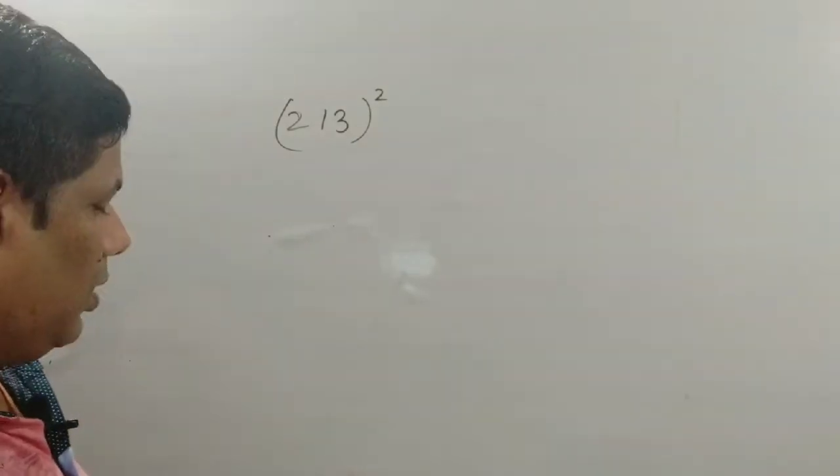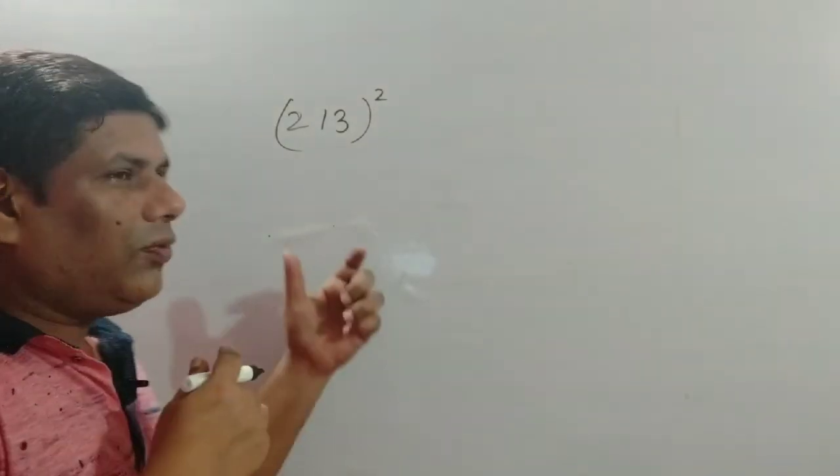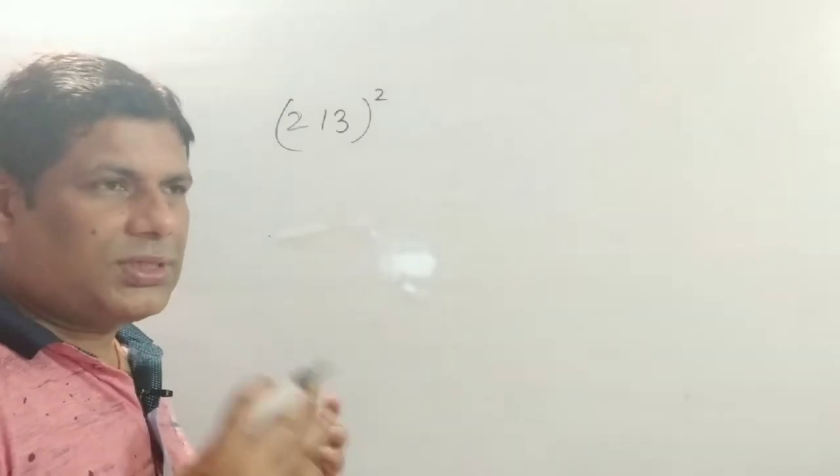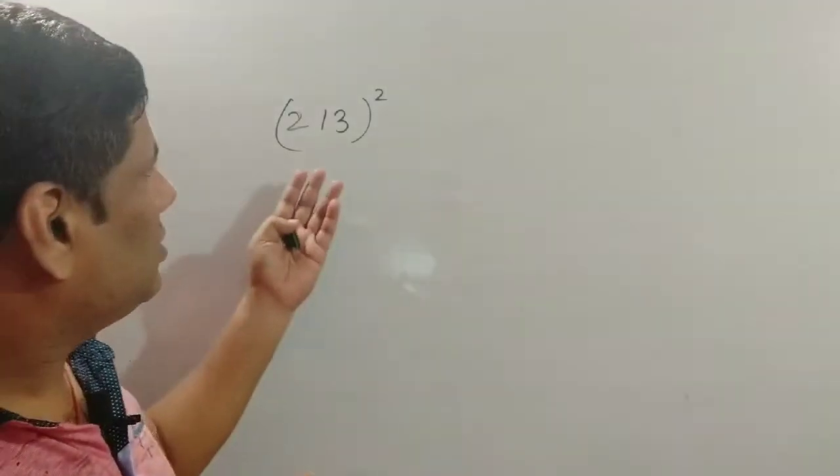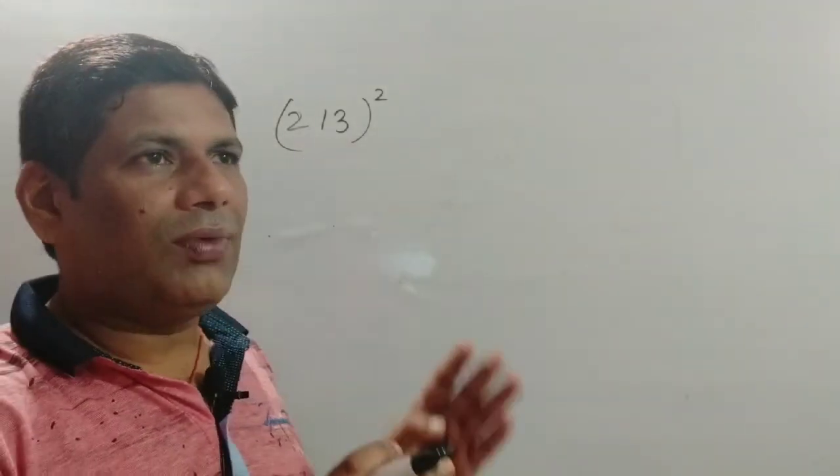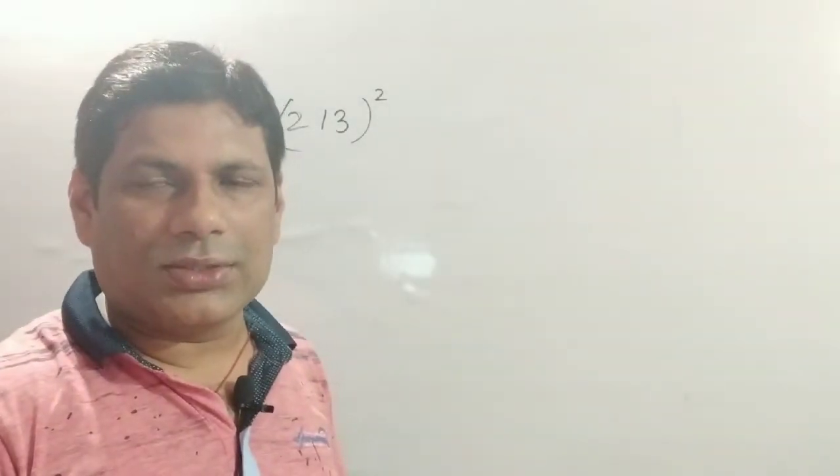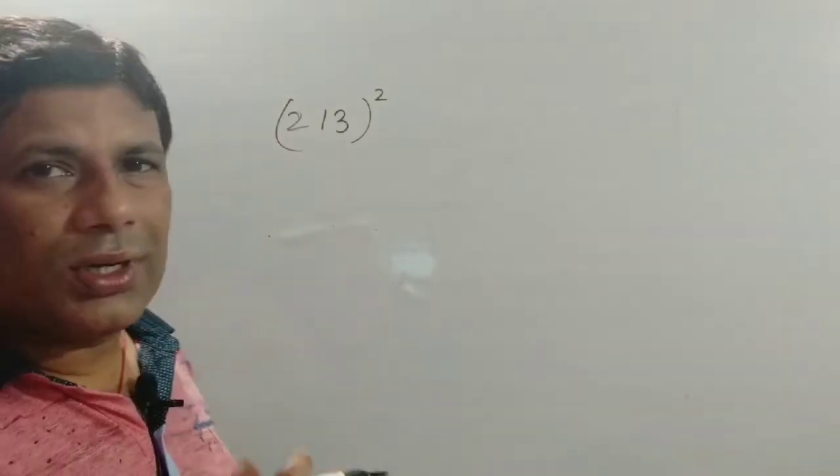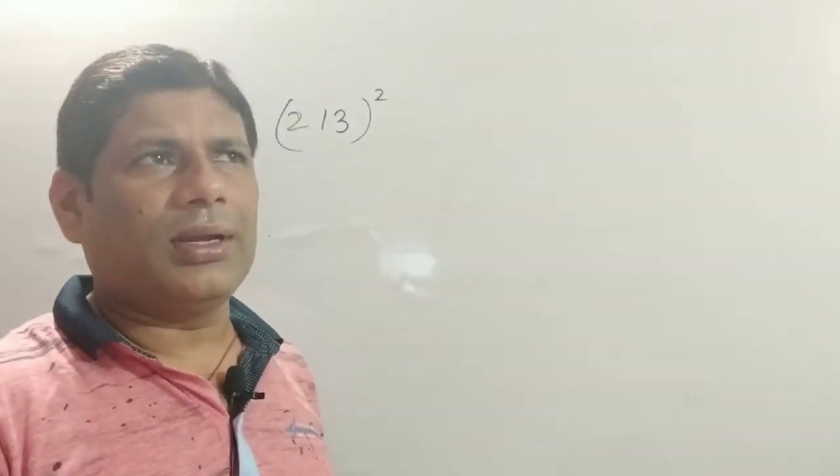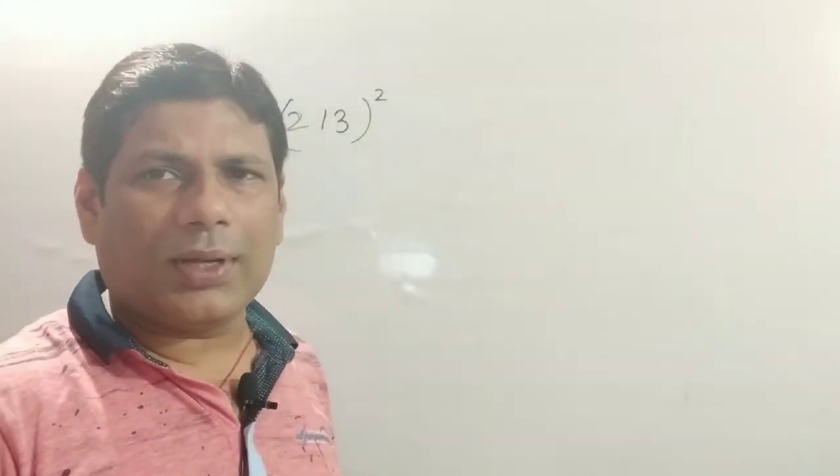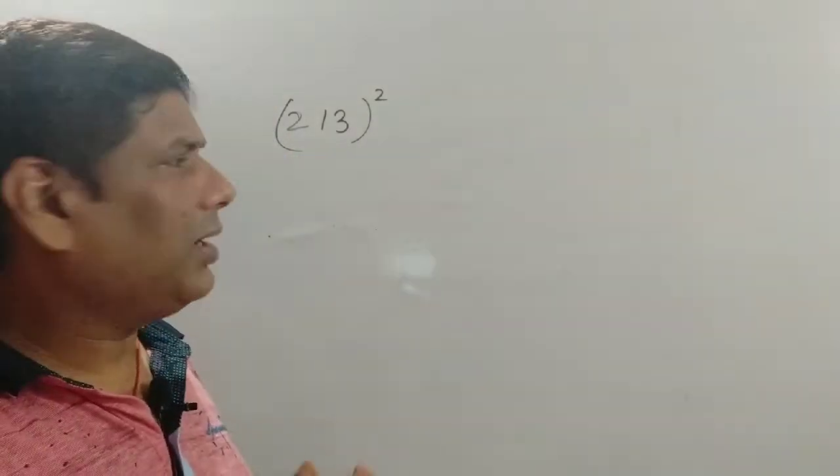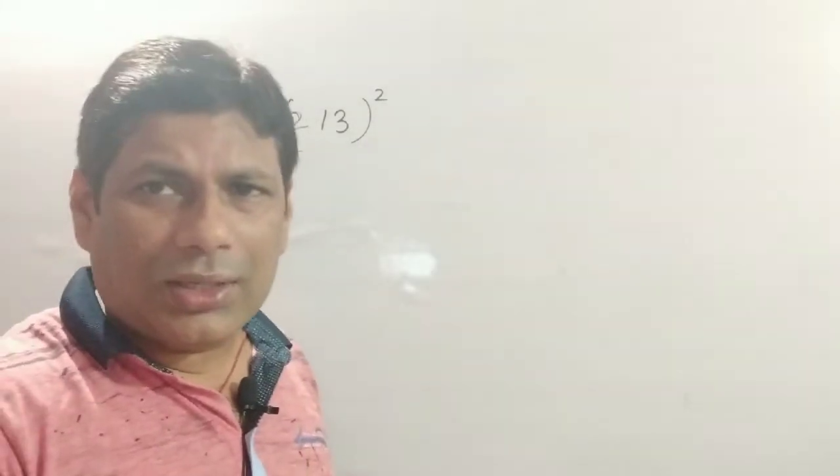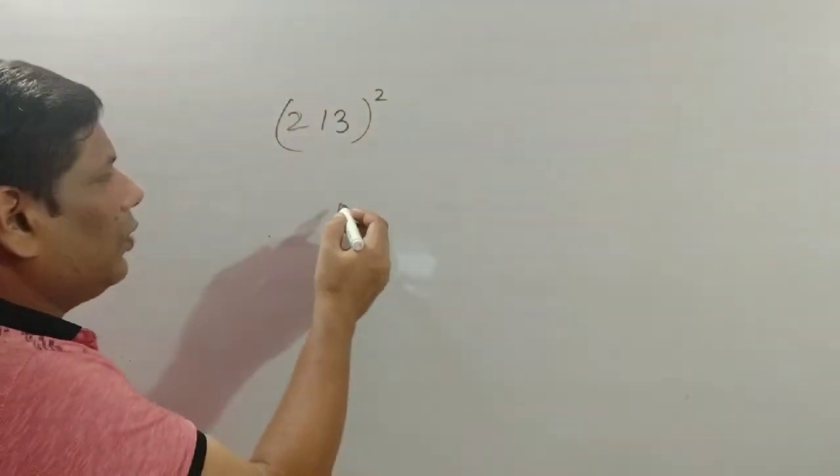Let's start. What will be the square of 213? Imagine a number nearest to it ending in zero. The nearest zero would be 210, but for convenience we take multiples of 100, so the nearest multiple of 100 to 213 is 200.